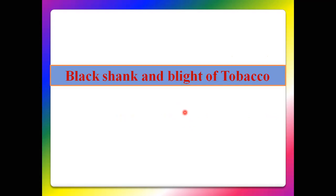The third disease is Black Shank and Leaf Blight of Tobacco. This disease is found in many tobacco-growing countries including United States of America, Africa, India, and other countries. It is most common in parts of India such as Andhra Pradesh, Tamil Nadu, Gujarat, and Uttar Pradesh. Losses due to this disease are about 30 to 40%.